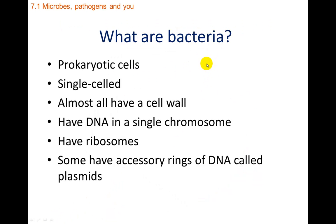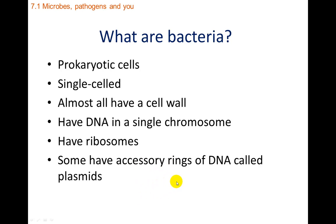First, what are bacteria? Bacteria are prokaryotic cells, meaning they don't have a nucleus and they don't have many membrane-bound organelles — no Golgi complex, no endoplasmic reticulum. They are single-celled organisms, and most have a cell wall. Their DNA is in a single chromosome, so it's really small. They have ribosomes, so they're able to make proteins. Some bacteria also have a small circle of extra DNA called a plasmid, which we use in biotechnology and biology to study things.